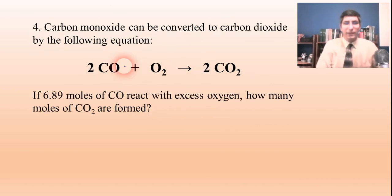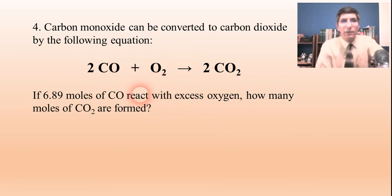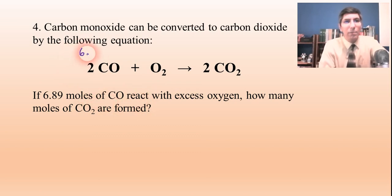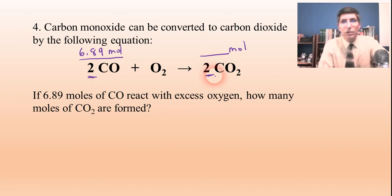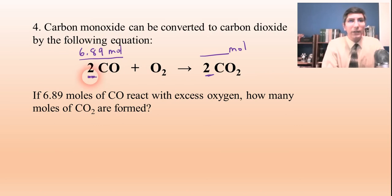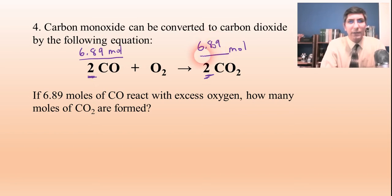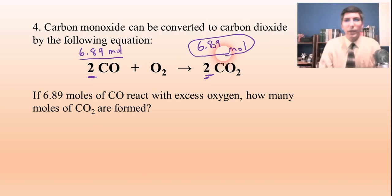We'll do one more like this. We're going to take carbon monoxide and convert it to carbon dioxide with this reaction. Starting with 6.89 moles of carbon monoxide, how many moles of carbon dioxide can we form? It is a two to two ratio — the mole values are equal — which means however many moles of carbon monoxide we have, we're going to have the same number of moles of carbon dioxide. So it is exactly 6.89 moles of carbon dioxide.